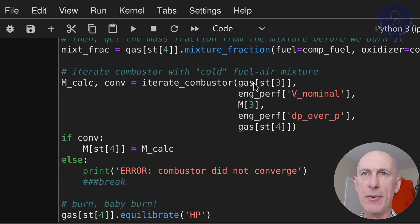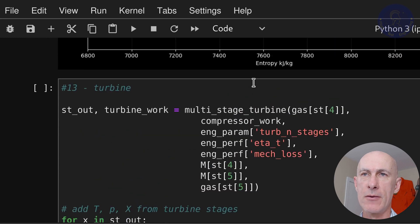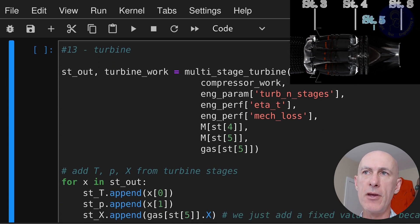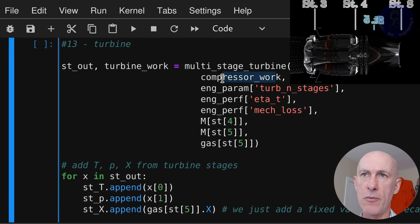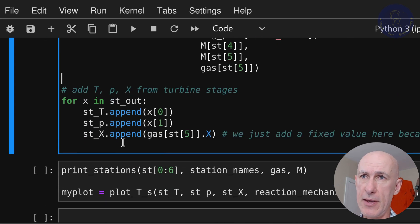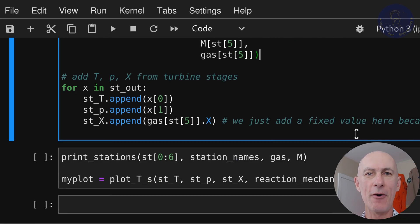So we call our multi-stage turbine function with the gas going in is the station 4, the exit of the combustor, and all of the other parameters we talked about. The compressor work, number of stages, turbine efficiency, mechanical loss, mach numbers. And we get back a list with the properties for each stage and the work done. After the function runs, we append each stage properties to our master results list so we can print and plot it. Let's run the next cell and see the results.